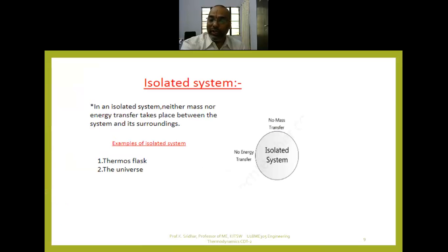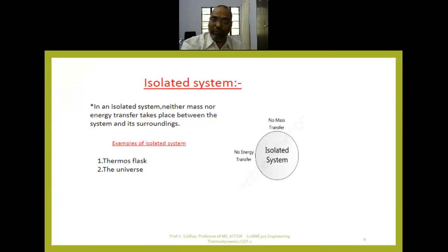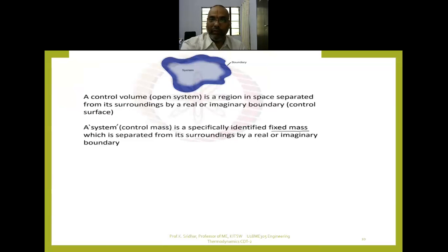An isolated system is one where there is neither mass transfer nor energy transfer. It is totally isolated — there is no interaction between the system and surroundings. The universe is the best example of an isolated system. Another example is a thermal mass flask, where there is no mass transfer and no energy transfer for a particular period of time.